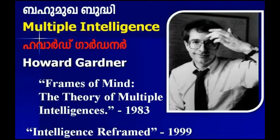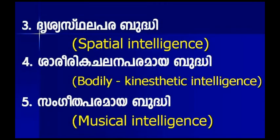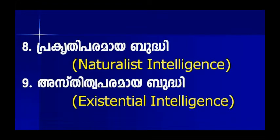Gardner initially presented the theory of multiple intelligences with a list of seven intelligences in his book Frames of Mind in 1983. The first two intelligences have been typically valued in schools, the next three are usually associated with the arts, and the final two are what he called personal intelligences. He later refined and extended it to nine intelligences in his book Intelligence Reframed in 1999.